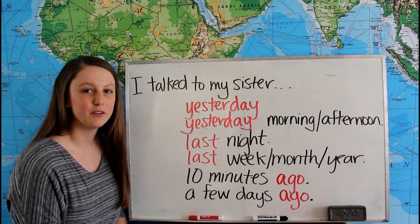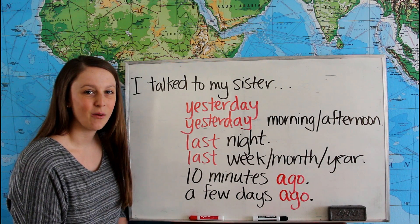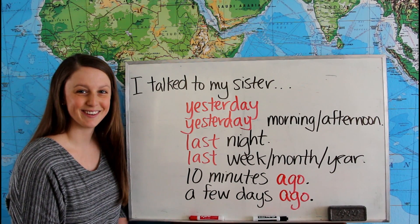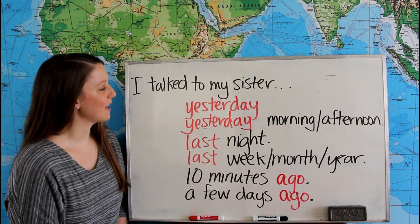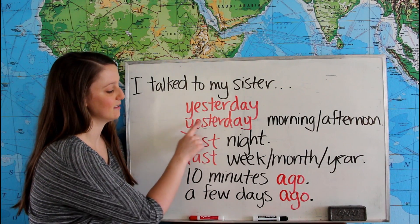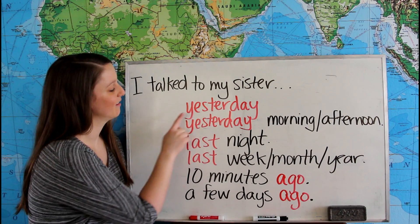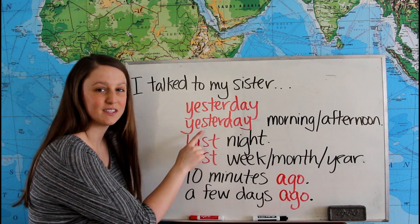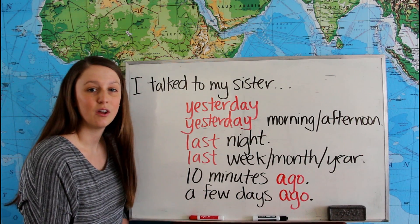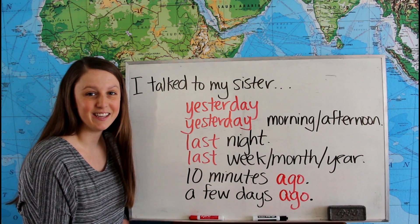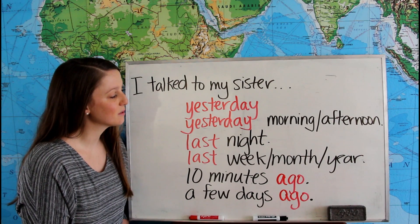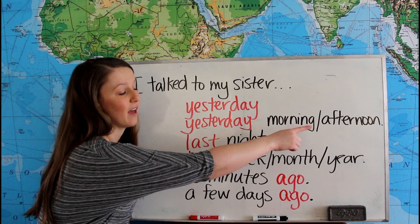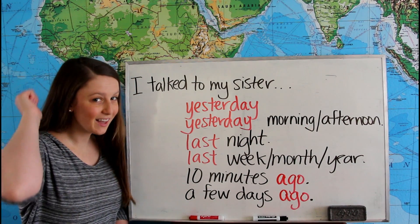We use these three words in a few different ways. We're going to start all of our sentences with 'I talked to my sister.' We can say: I talked to my sister yesterday, I talked to my sister yesterday morning, or yesterday afternoon, or yesterday evening. We use the word yesterday to talk about the morning, afternoon, or evening yesterday.